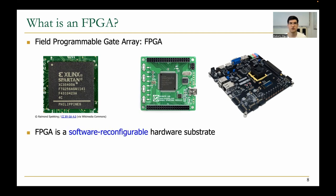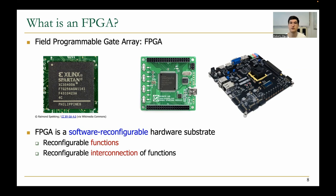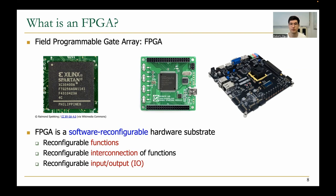What makes FPGAs so versatile? How can they enable many applications? Because they're reconfigurable. You can reconfigure these FPGAs to implement different functions after the FPGA chip is produced. They have many units that implement simple reconfigurable functions, and we can reconfigure the connections between these simple functions, and how the inputs and outputs are mapped to many physical input and output pins on the chip.